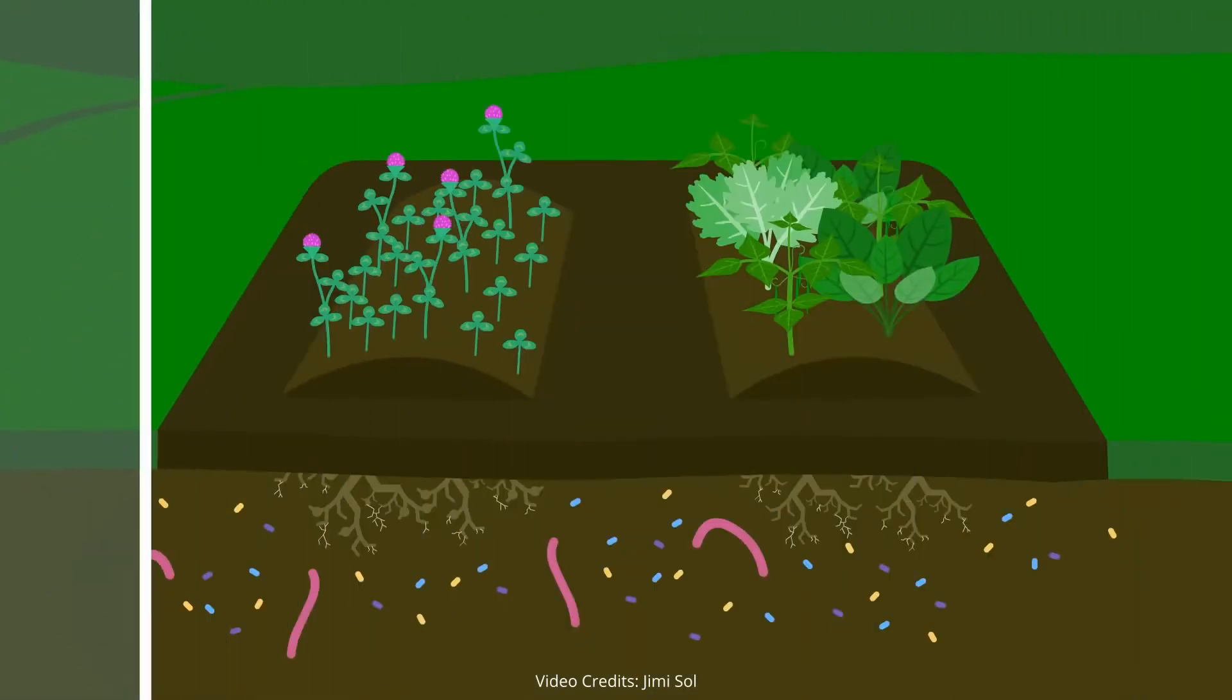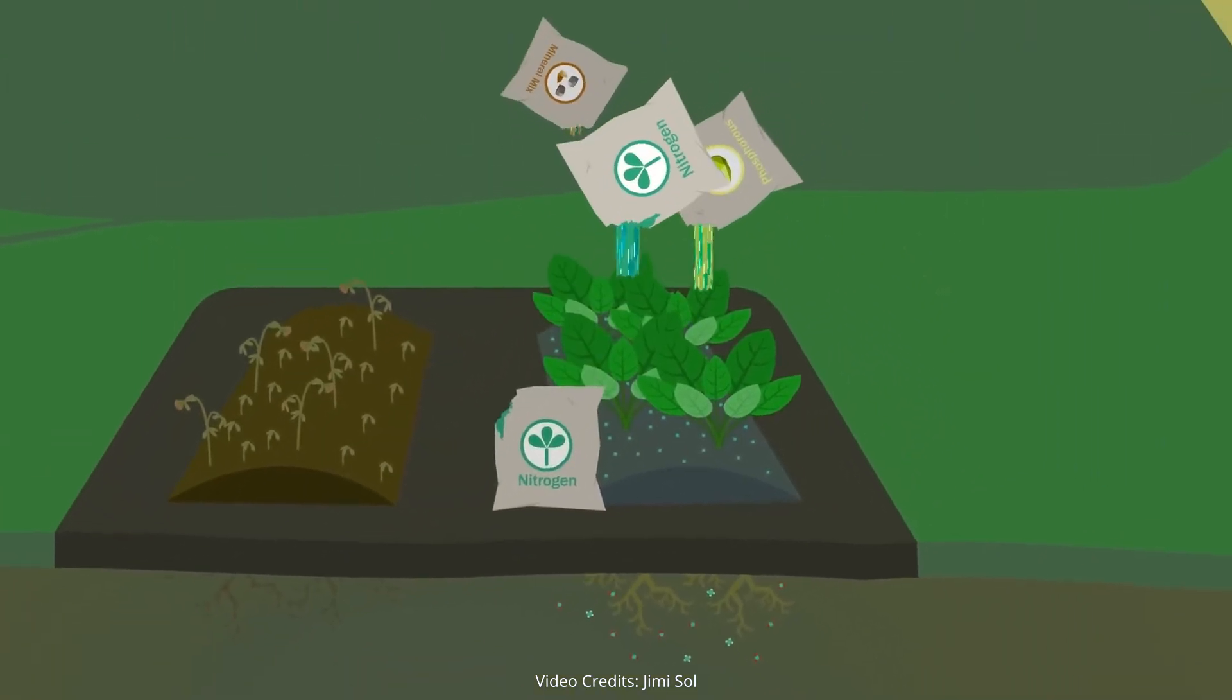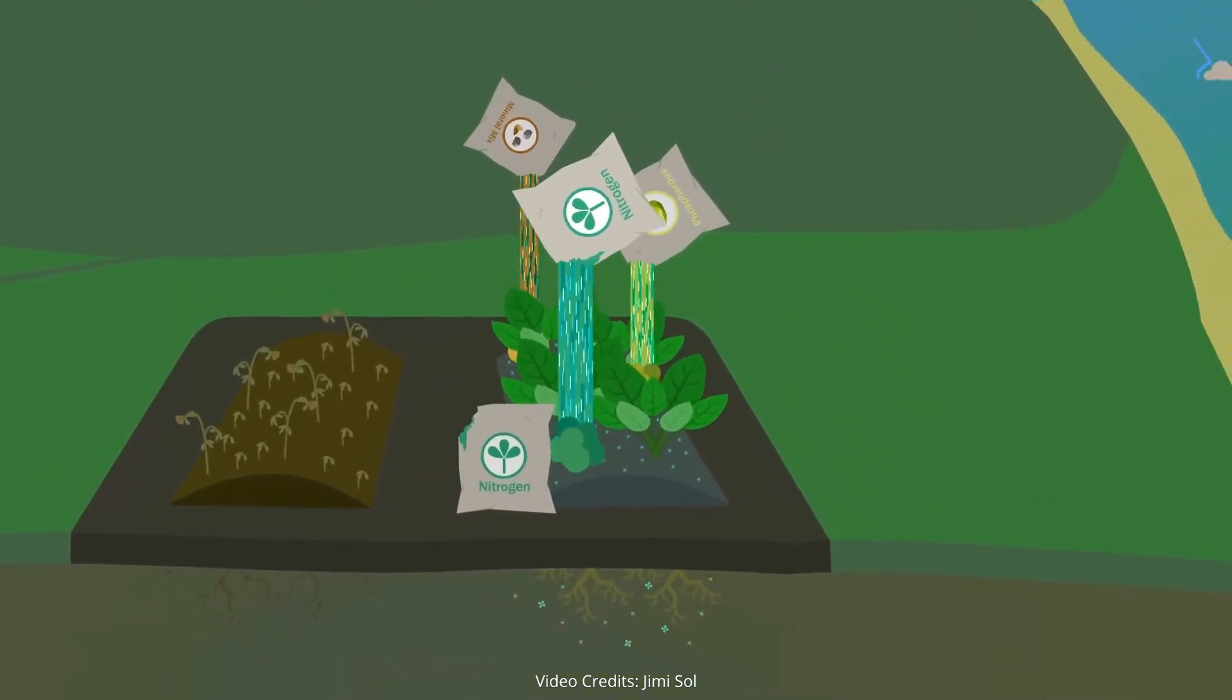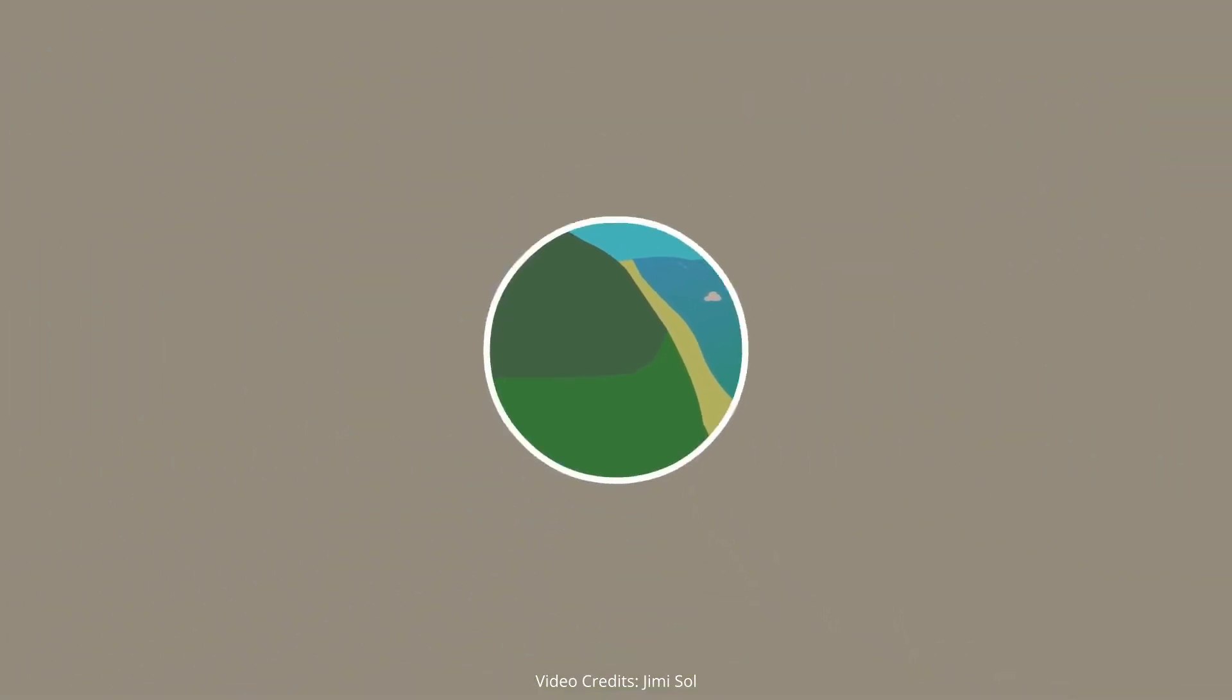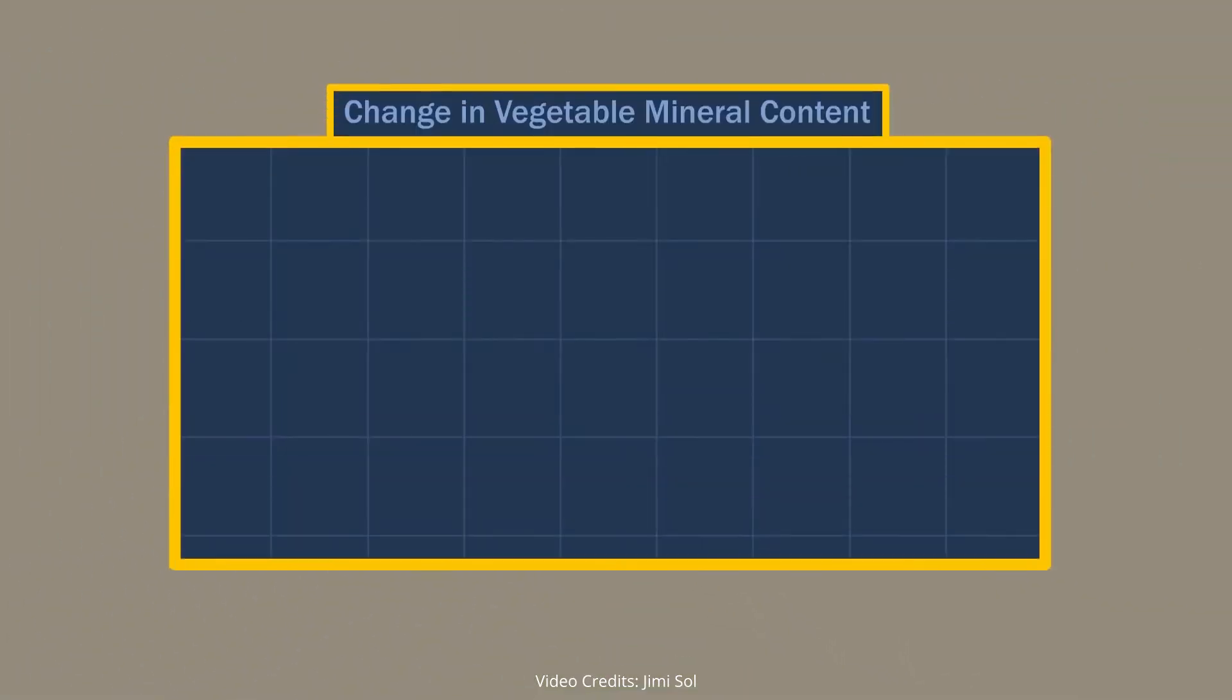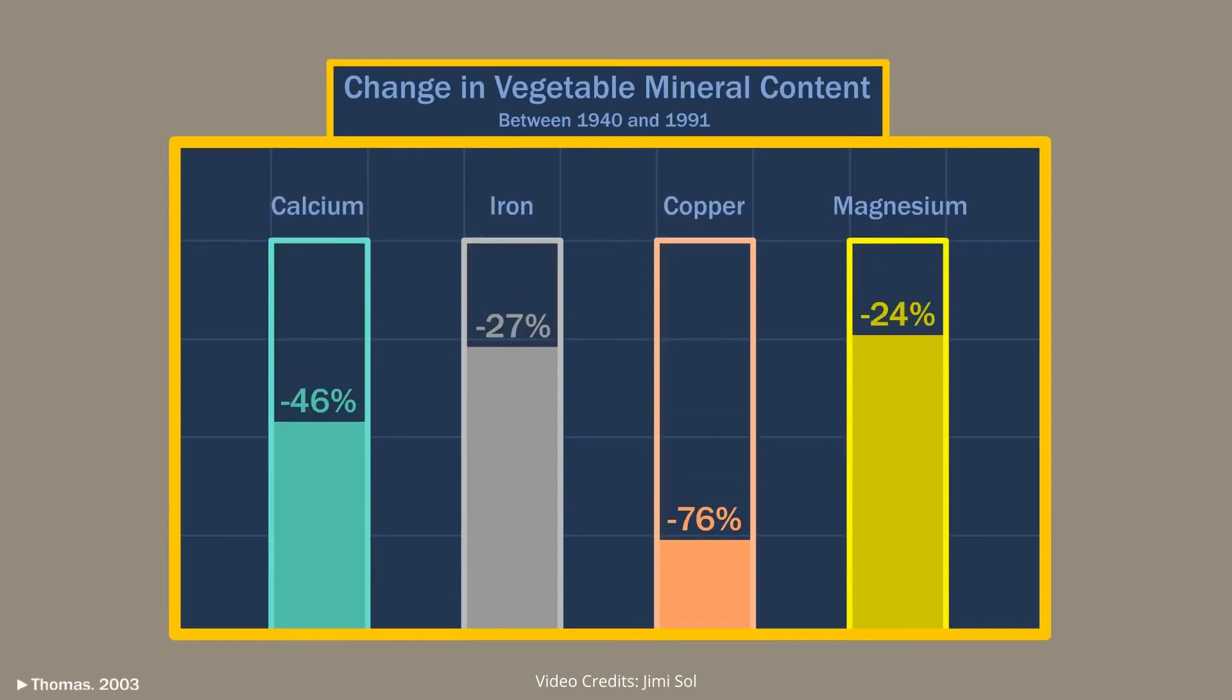Instead of working with this self-sustaining web of organisms freely sharing nutrients, we have to spend more money to add loads of fertilizer to dead soil, poisoning the water and contributing to climate change. Considering the inability of dead soil to supply plants with nutrients, it's no wonder that throughout the last century, vegetables have been steadily declining in nutritional value. Healthy food requires healthy soil.